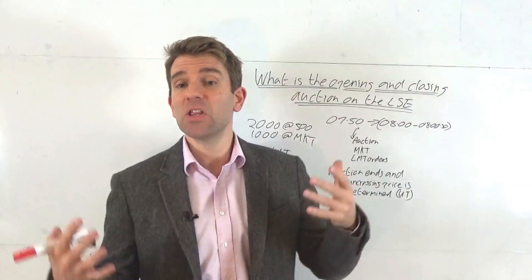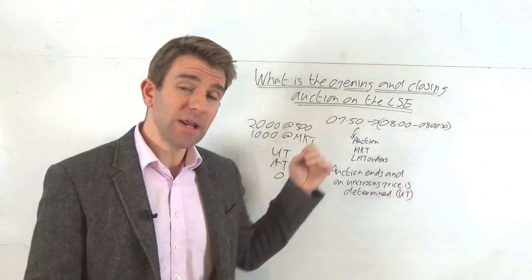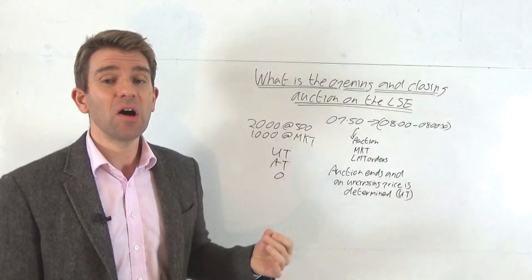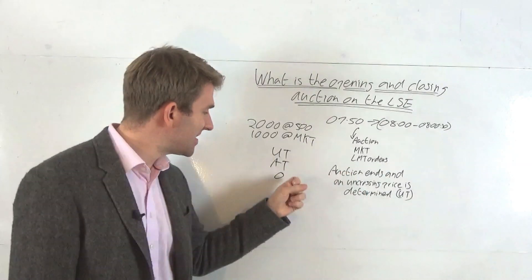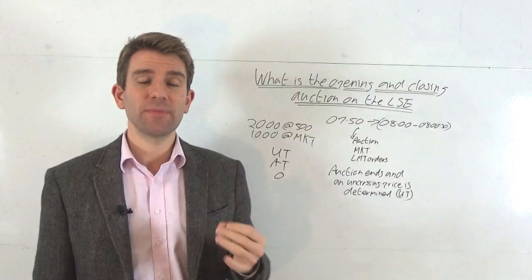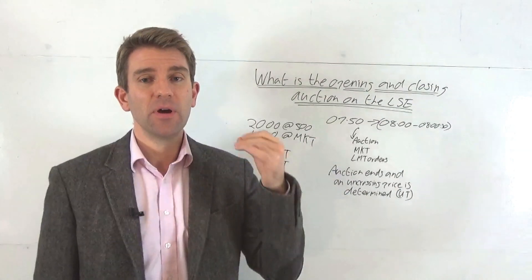But for a beginner's guide, the majority of the time, this is what happens. By the way, in the opening auction, if there's not enough for an uncrossing price, then the first AT trade - automatic trade, whether that's a buy or a sell - is used as the open price.